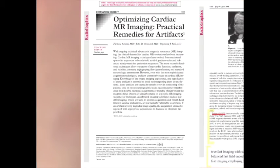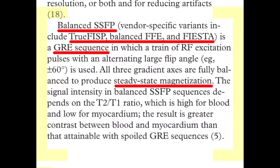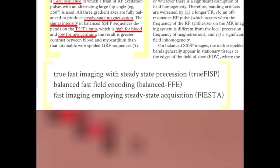Balanced SSFP is the main sequence giving us bright blood. Different vendor names include True FISP, balanced FFE, and FIESTA — but SSFP is the non-vendor-specific name. It's actually a GRE sequence using an alternating large flip angle to achieve steady-state magnetization in three axes. Signal intensity is the square root of T2 over T1, which is mostly high for blood and low for myocardium, giving good contrast between blood pool and myocardium.